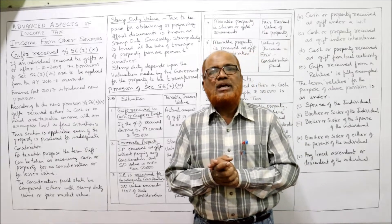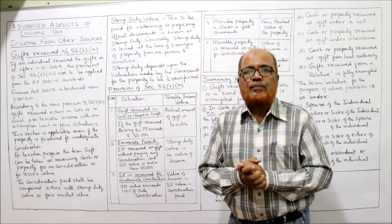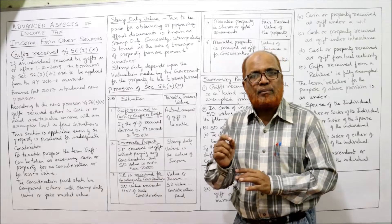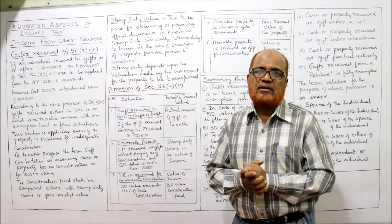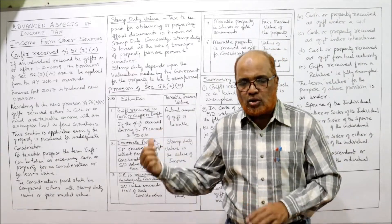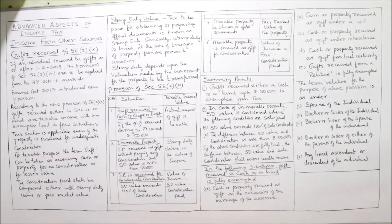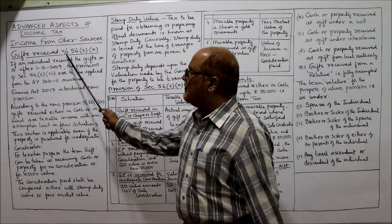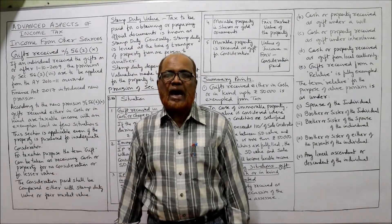In this video I am going to explain about gift received by an SSC. Before starting the explanation, take a screenshot of the notes which I have written on the board so that you can make a permanent record of these points. Later on you can refer, remember, and excellently write in examination. Take a screenshot and then I will explain the points. Now I am going to start the gift received under section 56, subsection 2, and clause 10.